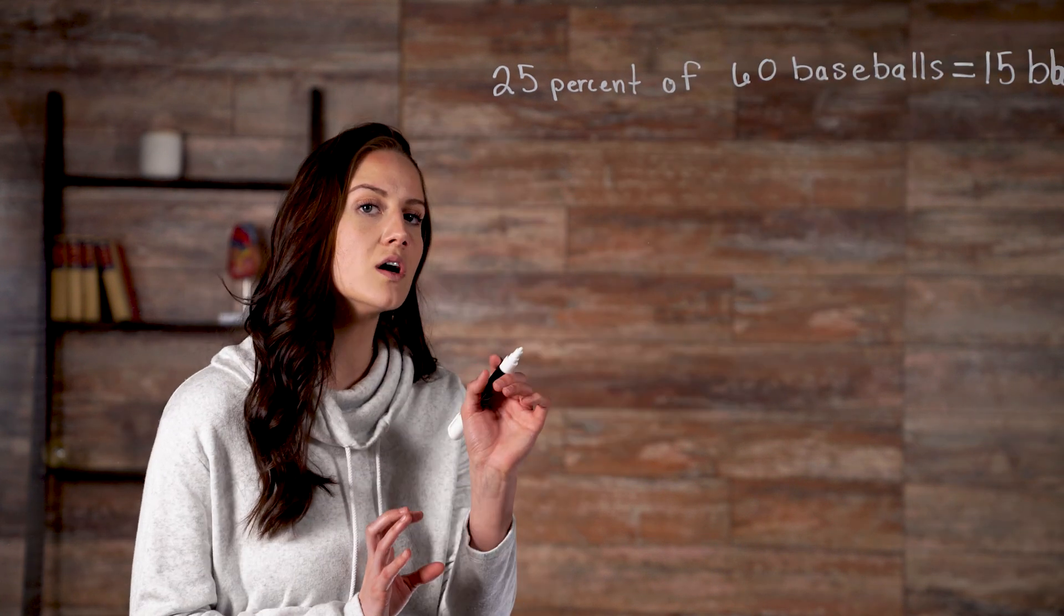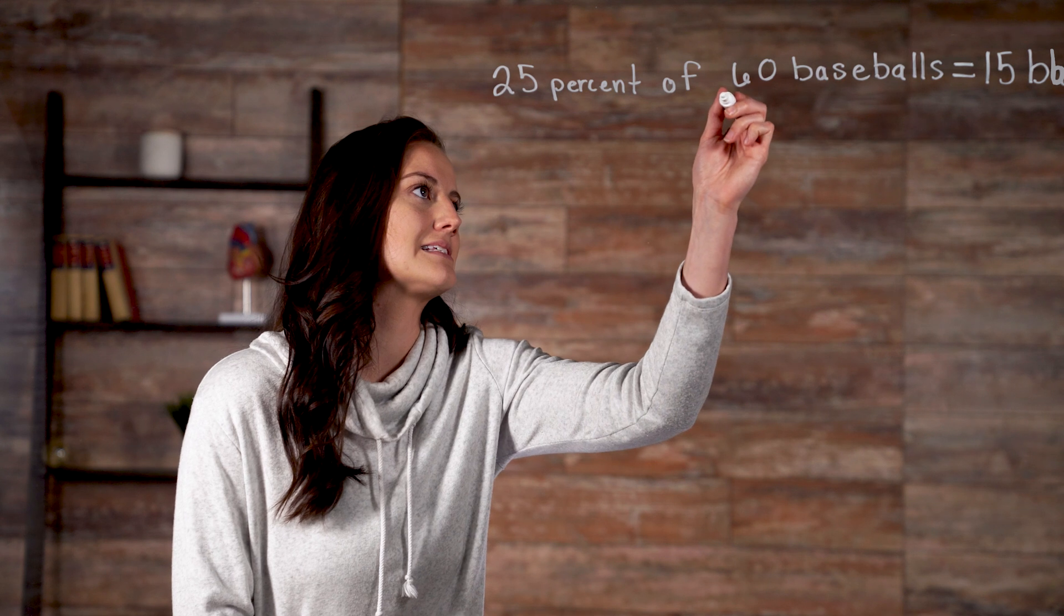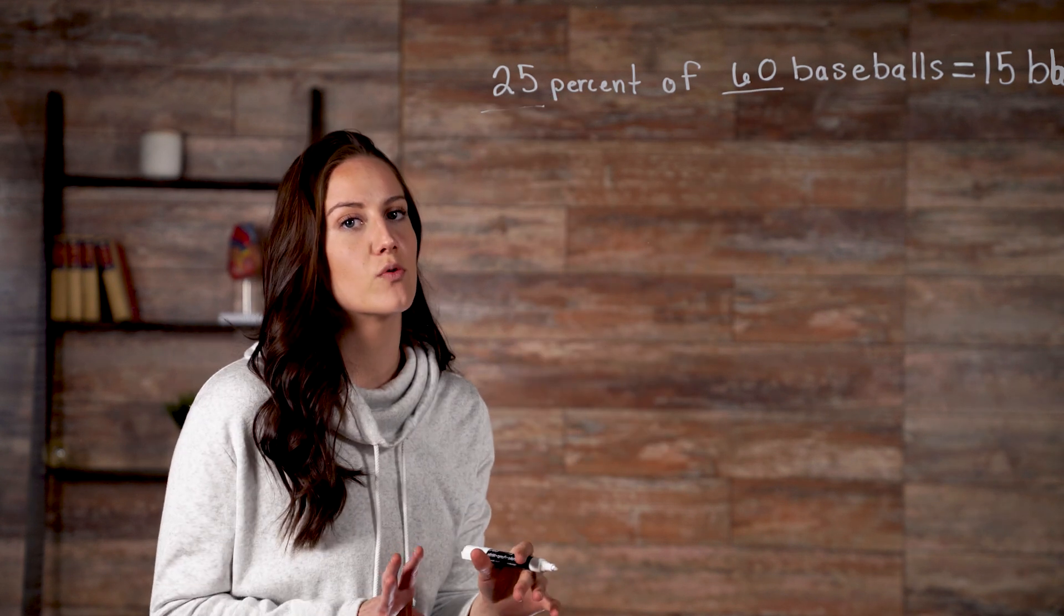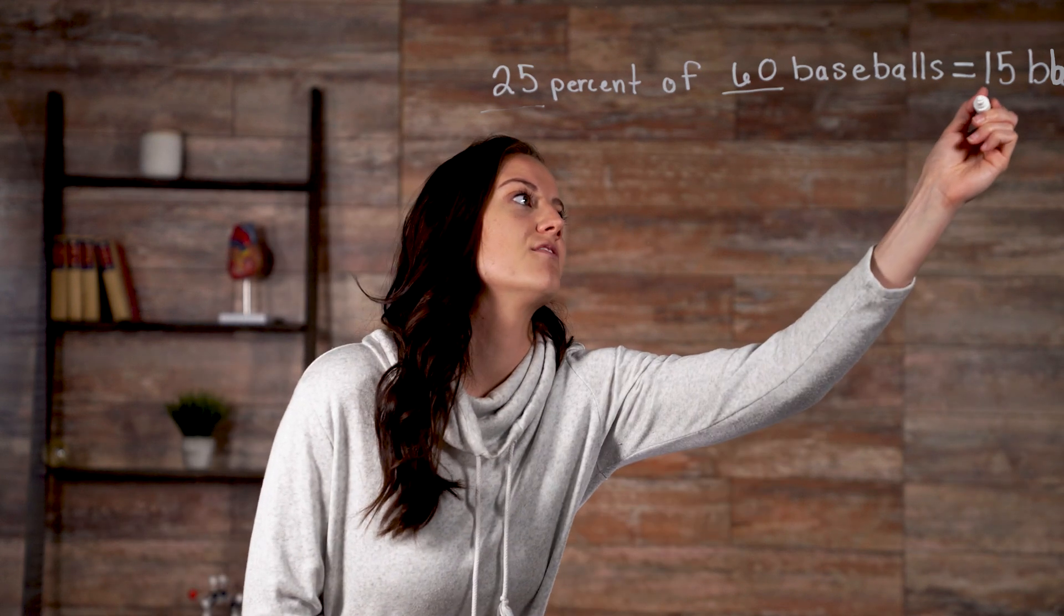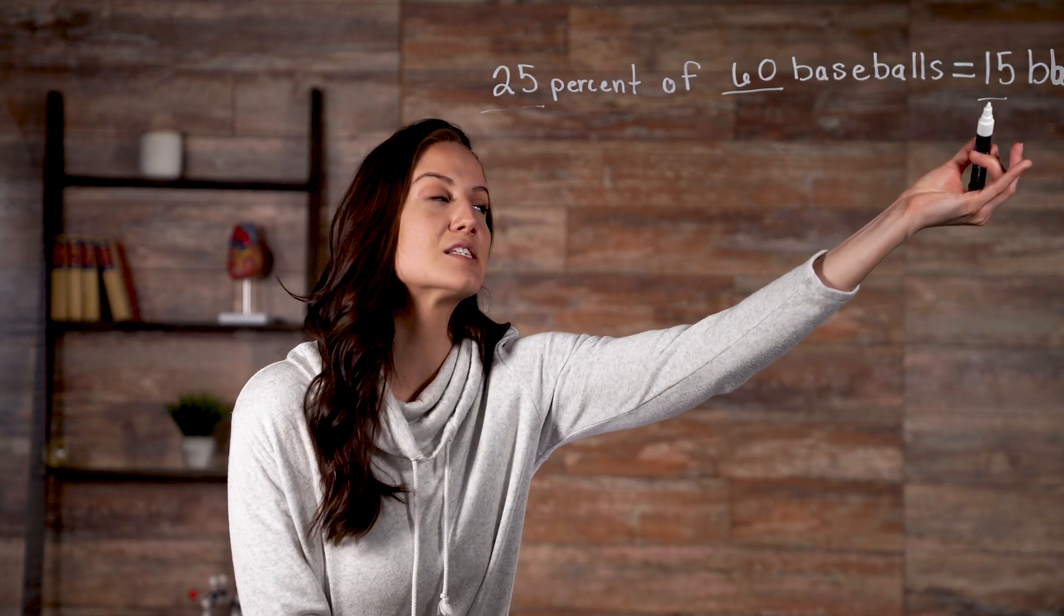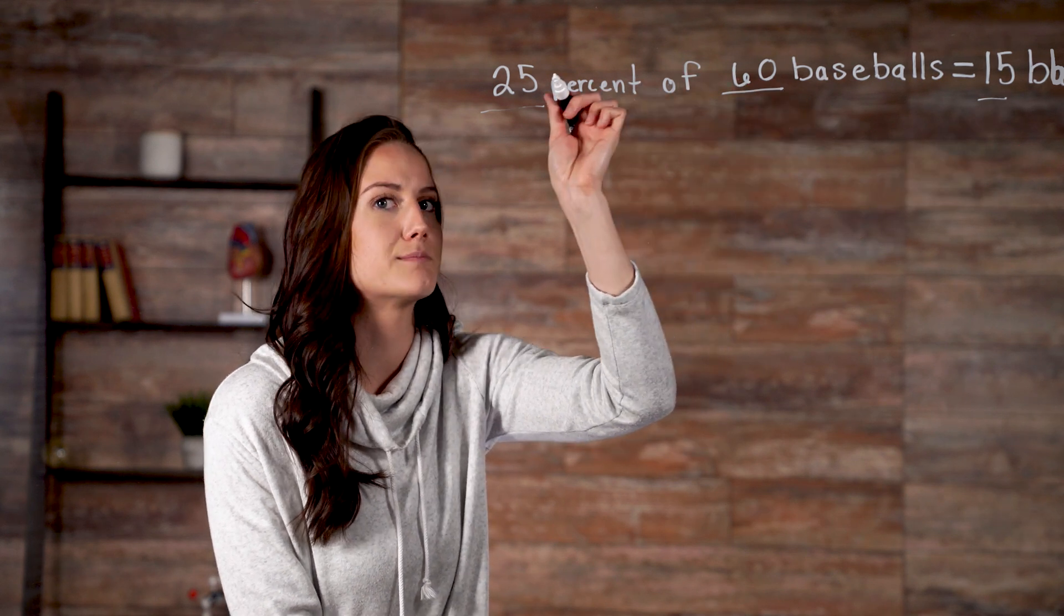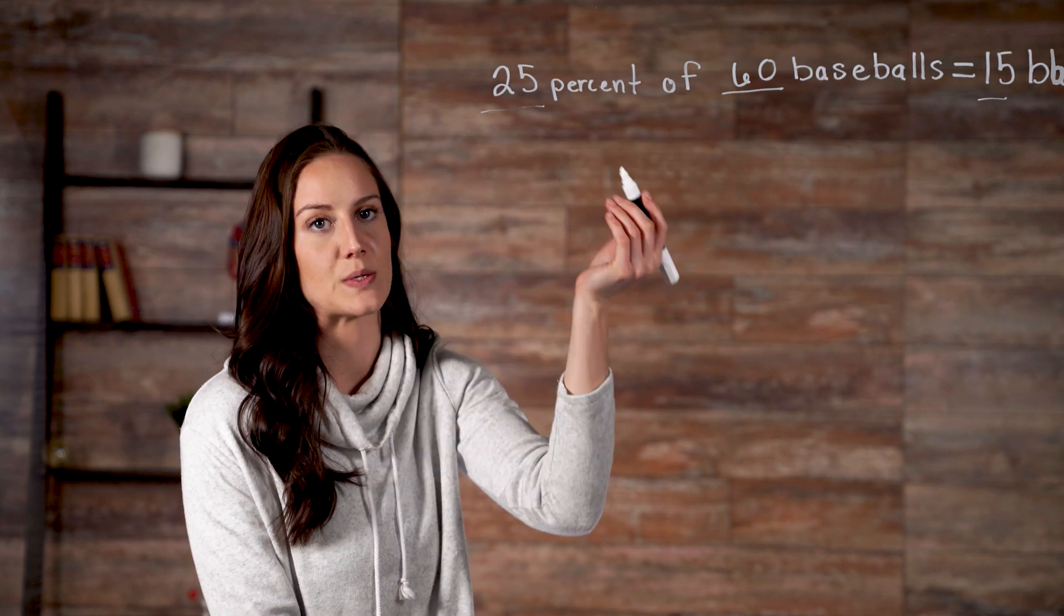So the quantity of baseballs is 60. The percent is 25. Therefore, the percentage is 15. We get this percentage by multiplying the quantity times the percent. So here's what that looks like.